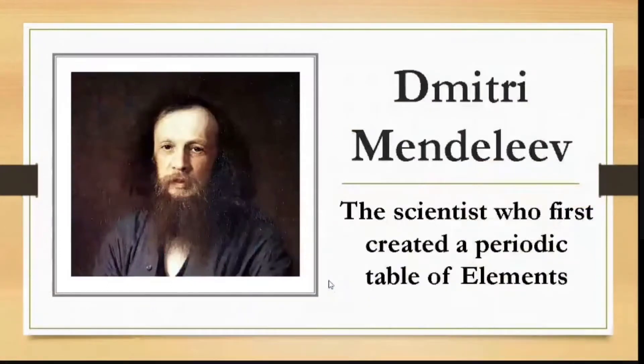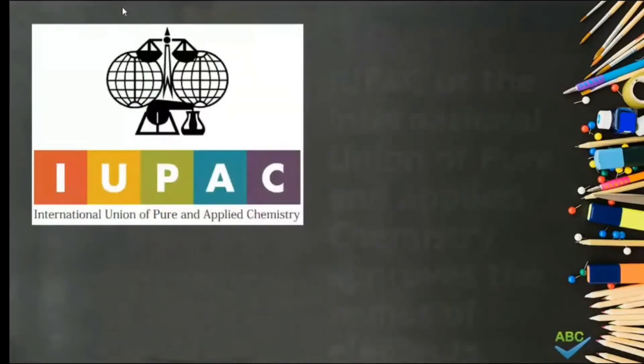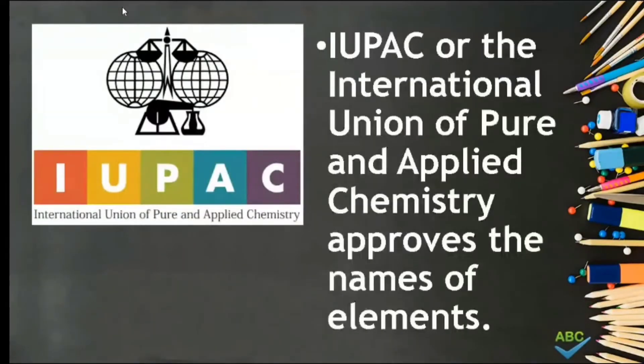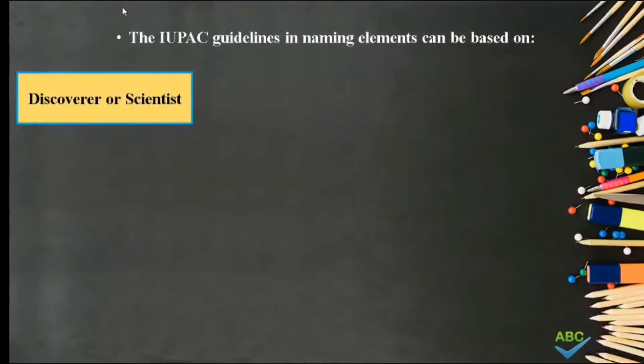Dmitri Mendeleev was the scientist who first created a periodic table of elements. Names of elements have originated from a variety of sources. By international agreement, the names of chemical elements have been standardized for use throughout the world. IUPAC or the International Union of Pure and Applied Chemistry approves the names of elements. The IUPAC guidelines in naming elements can be: